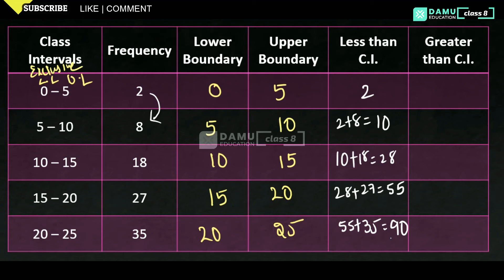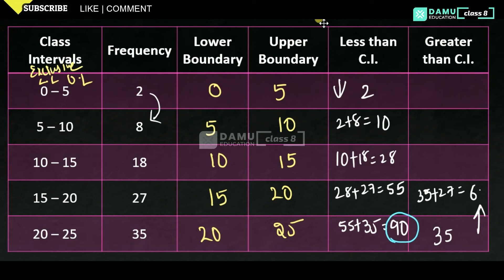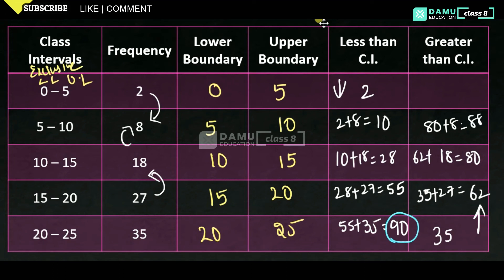For greater than cumulative frequency, we add from bottom to top. 35 stays as 35; then 35 plus 27 equals 62; then 62 plus 18 equals 80; then 80 plus 8 equals 88; then 88 plus 2 equals 90. So the highest value of 90 appears in the first class interval for greater than cumulative frequency.